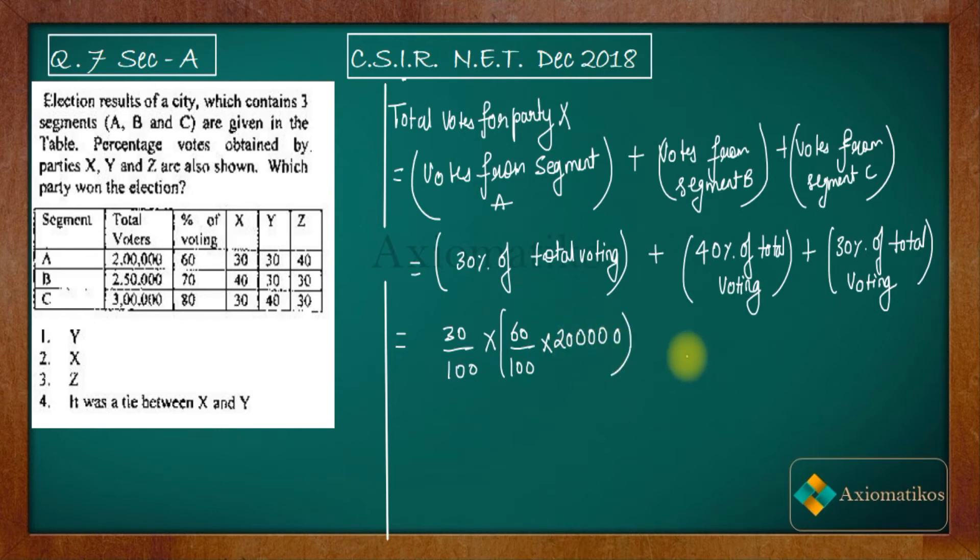Are you getting my point or not? The same thing we are going to do for the remainings. See, this is what we are getting: 60% of 2 lakh, 70% of 2.5 lakh, and 80% of 3 lakh.